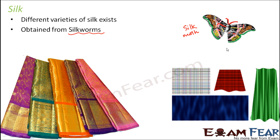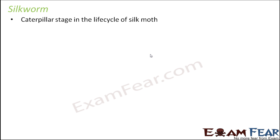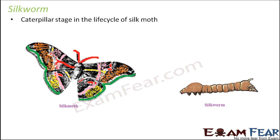In some stage of their lifetime, silk moths are silkworms — a worm-like creature which later becomes a silk moth. The silk moth is basically the adult form. Silkworms are the caterpillar stage in the life cycle of the silk moth. This is a silk moth, which resembles a butterfly, and this is a silkworm, which resembles any other worm — it crawls on the ground. During the silkworm stage, it produces silk.